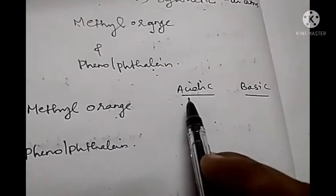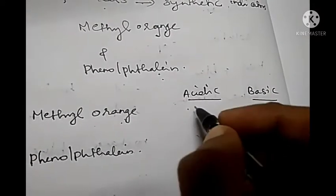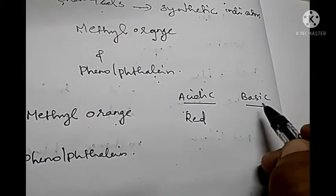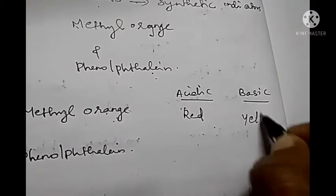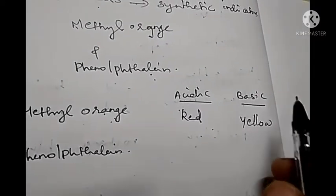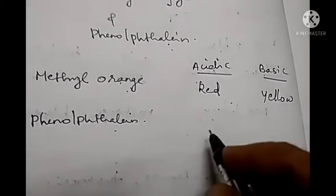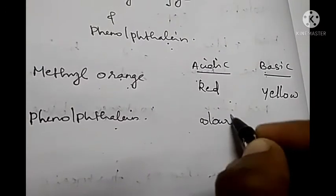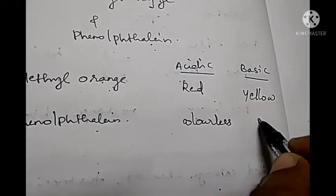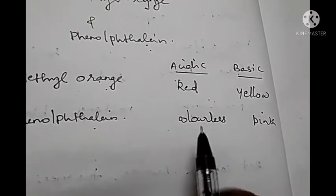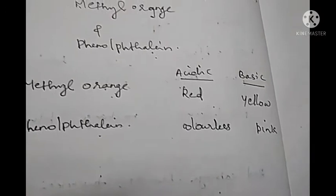Methyl orange is already having an orange color. When added to acidic solutions, it changes its color to red. When added to a basic solution, it changes its color to yellow. By observing these colors, we can identify whether the given solution is acidic or basic. Then, phenolphthalein is a colorless solution. When added in acidic solution, there is no change — it remains colorless. When added to a basic solution, it develops a pink color. From this color change, we can identify whether it is acidic or basic.